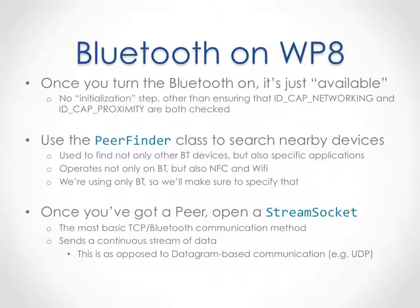On Windows Phone 8, you ask for Bluetooth in capabilities and turn it on in phone settings. We use the PeerFinder class to search for nearby devices — it works not just for Bluetooth but also Wi-Fi and NFC. We'll tell it to search only over Bluetooth. For example, some students made a baby monitoring app where they used NFC via PeerFinder to exchange addresses, then communicated over Wi-Fi — which is actually pretty cool.